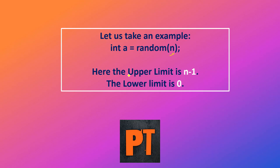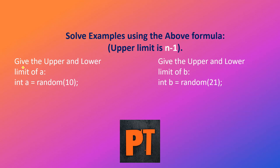Here, the upper limit is n-1. This is the most important thing — n-1 is the formula. So whatever number you have, upper limit is that number minus 1. Lower limit is always 0. Let's take an example: int a = random(10). So 10 minus 1 equals 9 — upper limit is 9, lower limit is 0.